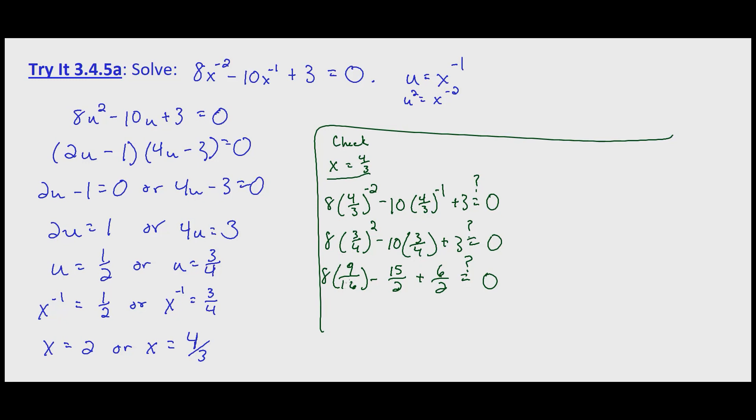And 8 and 16 that will cancel, so that's 9 over 2, minus 15 over 2, plus 6 over 2. Does that equal 0? Well 9 minus 15 is negative 6, plus 6 is 0 halves. So 0 does equal 0 and that solution checks.